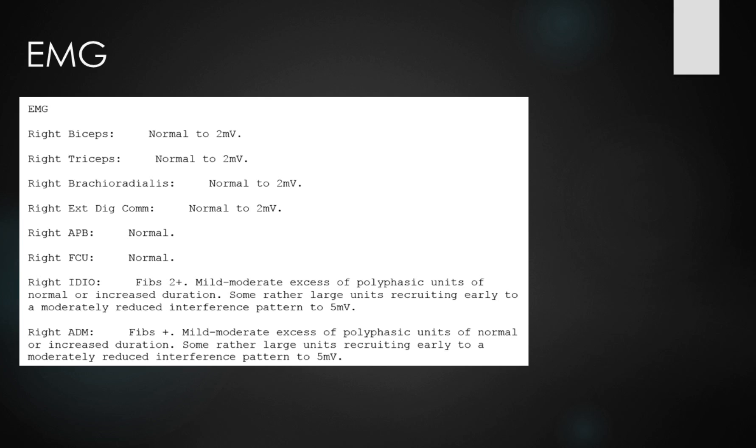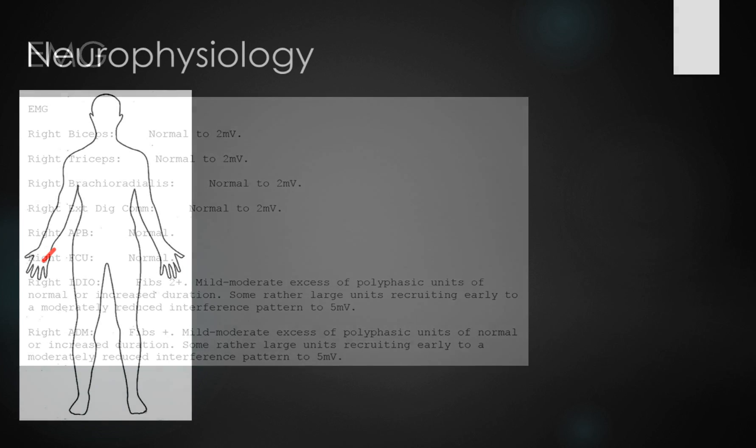What we can see is for the IDIO and the ADM muscles, both ulnar innervated muscles, we've got fibrillations here and we can see clear evidence of denervation being present, confirming the fact that we have an active process in the distal ulnar innervated muscles.